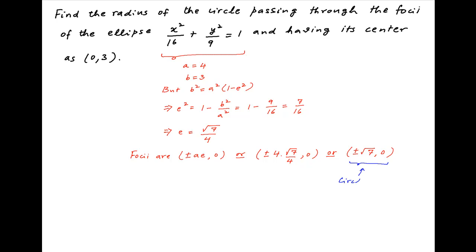The desired circle passes through the foci whose coordinates are obtained above, and the center of the desired circle is given to be (0, 3).